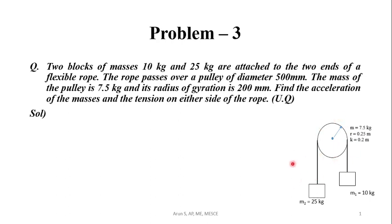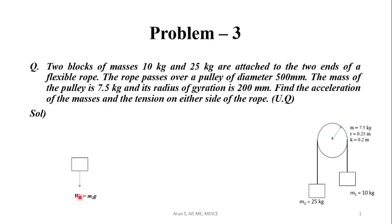This is the free body diagram. Assume that M2 will be moving in the downward direction, so M1 will be moving in the upward direction and the pulley will be rotating in the counterclockwise direction. The weight will be acting vertically in the downward direction, given by W2 equal to M2 times g. Let the tension on this side be T2.